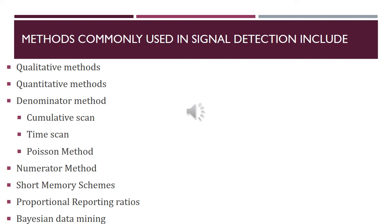The methods used in signal detection are not part of the syllabus, but for general knowledge: there are qualitative and quantitative methods. Quantitative methods include the denominator method — which includes cumulative scan, time scan, and Poisson method — the numerator method, short memory schemes, proportional reporting ratios, and Bayesian data mining techniques.